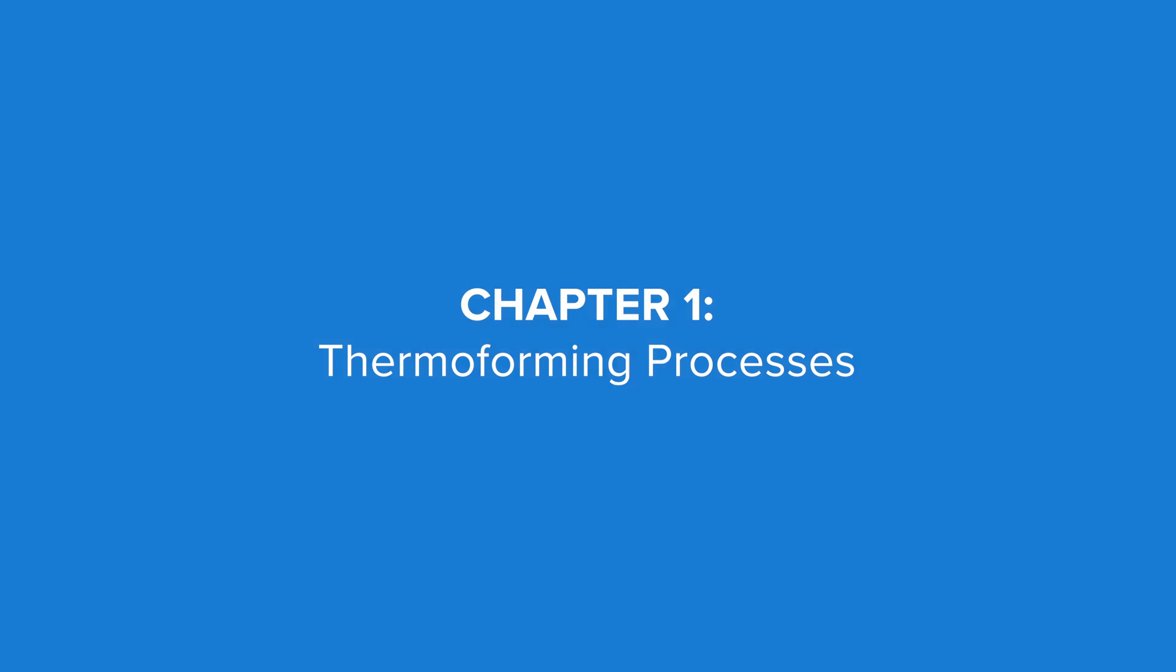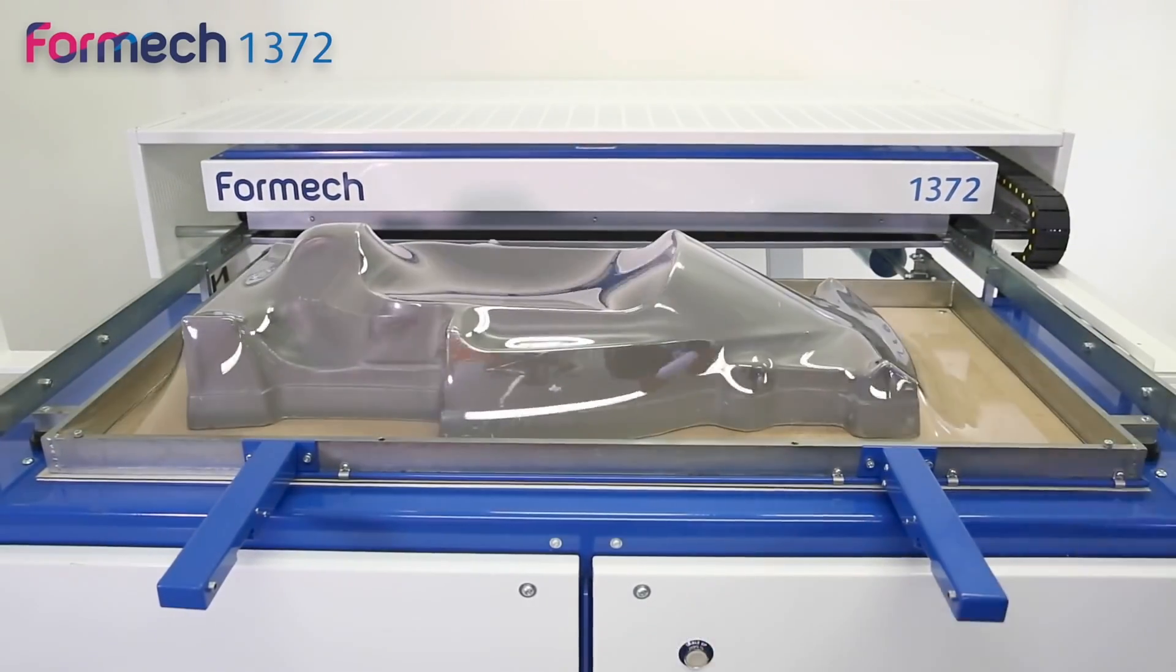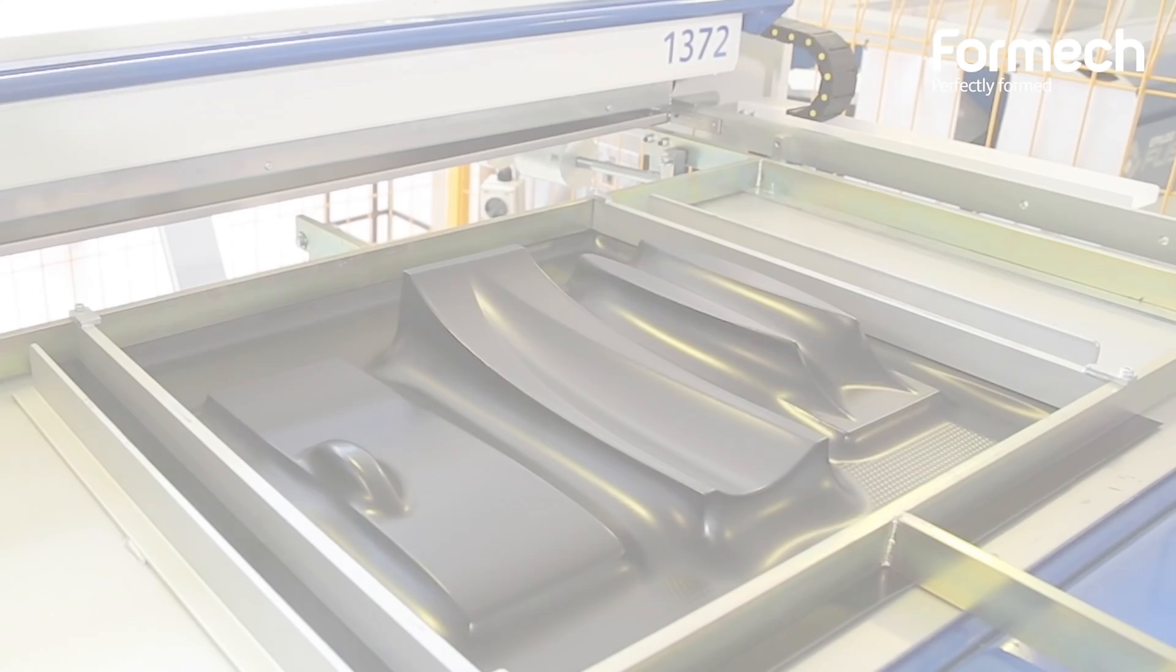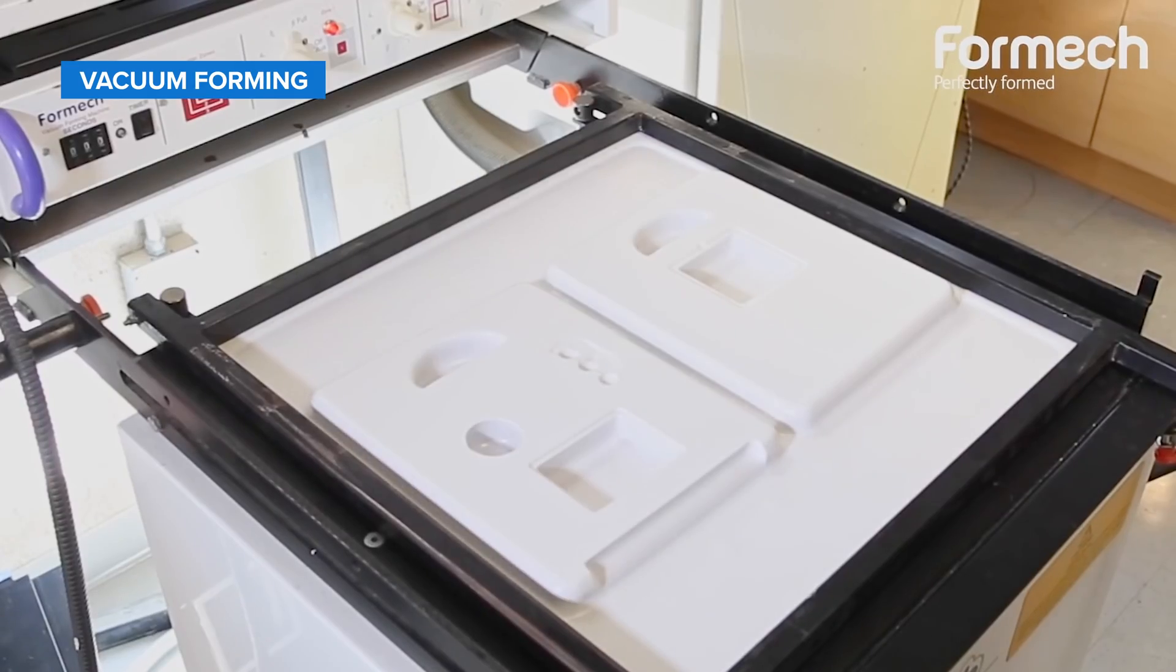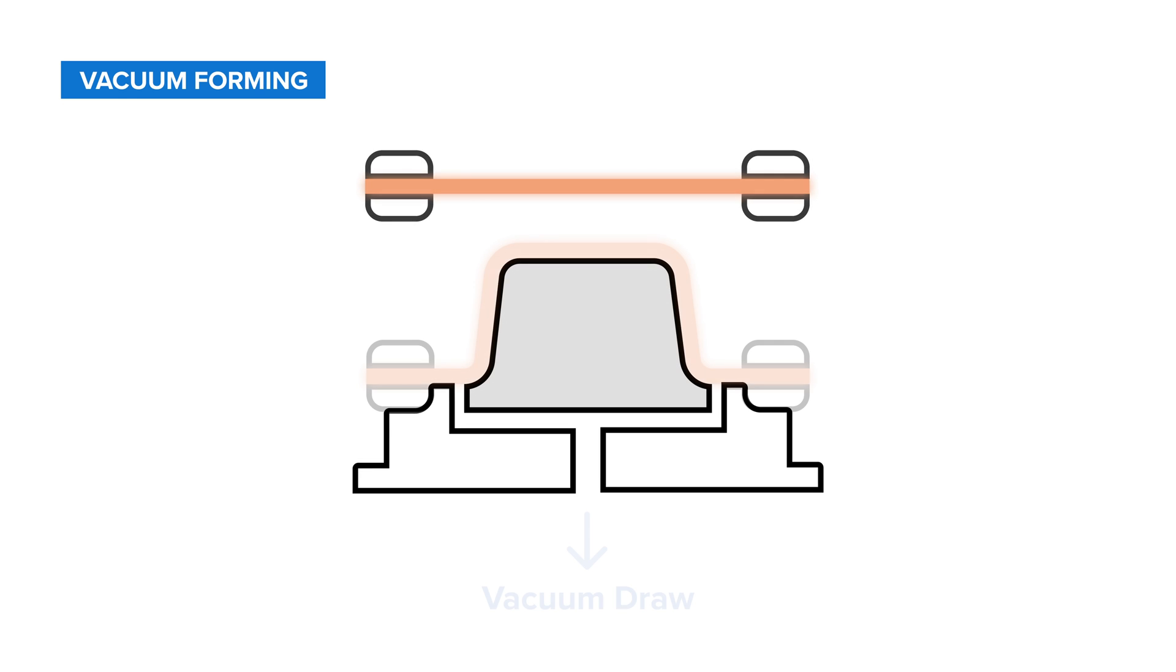Thermoforming processes heat and form sheets of plastic onto a tool using vacuum, pressure, or mechanical forces. Vacuum forming is the simplest, least expensive, and most used of these techniques. It works by heating and then pulling a sheet of plastic around a single mold using suction.